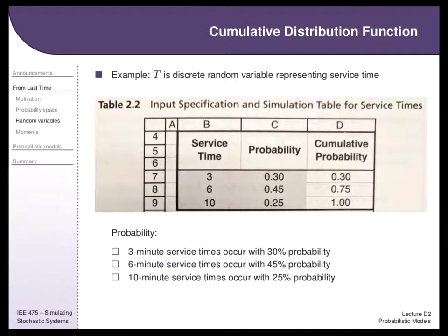As an example motivating next week's material: suppose you have a discrete service time distribution where, rather than fitting a continuous distribution, you observe a tri-modal clustering. Someone going in for service pretty much either takes three minutes, six minutes, or ten minutes.